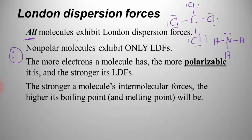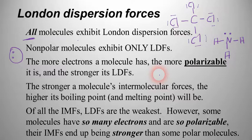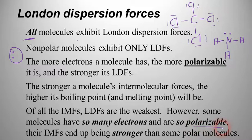This is an important point that often pops up on the AP exam: generally speaking, London dispersion forces are the weakest of all the intermolecular forces. However, there are some molecules that have so many electrons, and as a result they're so polarizable — that's an important word, polarizability — their intermolecular forces end up being stronger than some polar molecules.